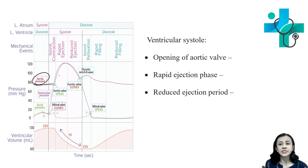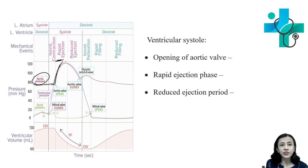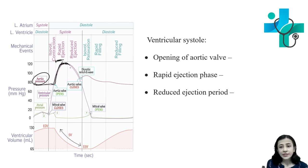During ventricular systole, intraventricular pressure rises and, along with it, aortic pressure also starts increasing. Intraventricular pressure rises above aortic pressure at the beginning of the ventricular ejection phase. With opening of the aortic valve at the end of isovolumetric contraction period, aortic pressure rises and reaches a maximum of 120 mmHg at the end of rapid ejection. During rapid ejection, aortic pressure is slightly higher than ventricular pressure. During reduced ejection, both aortic and intraventricular pressures start falling.